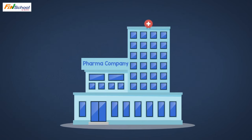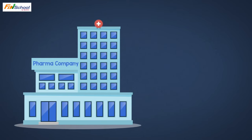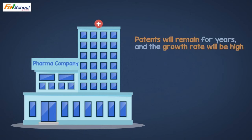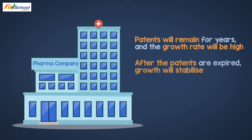This model is best suited for firms that are currently in a high growth phase for a certain time and will very soon come to a stable growth rate. An example could be a pharma company that recently received a patent. That patent will remain for a few years, so the company will see high growth during those years because its growth will be supernormal. Once the patent expires, the company's growth rate will stabilize.